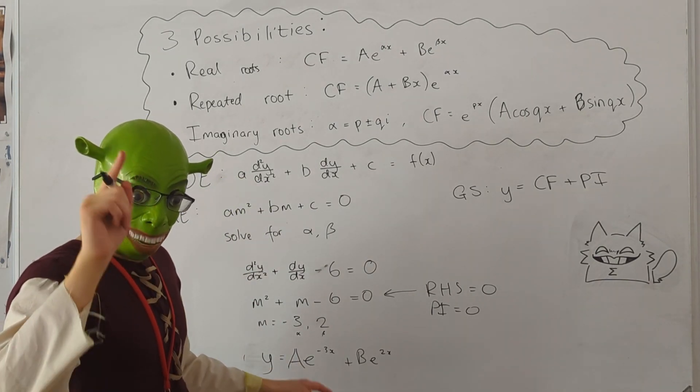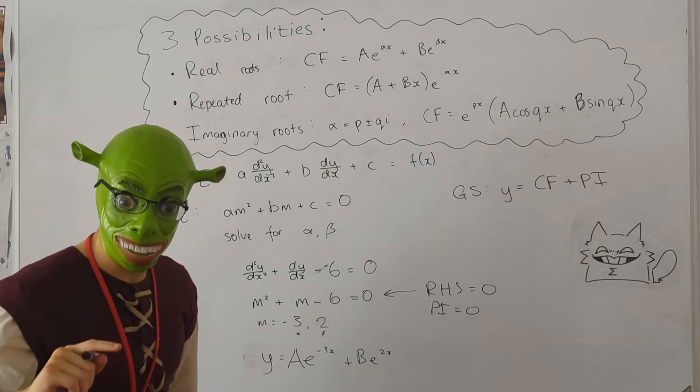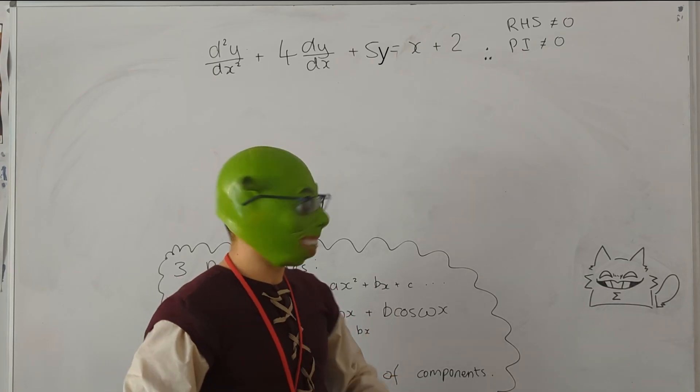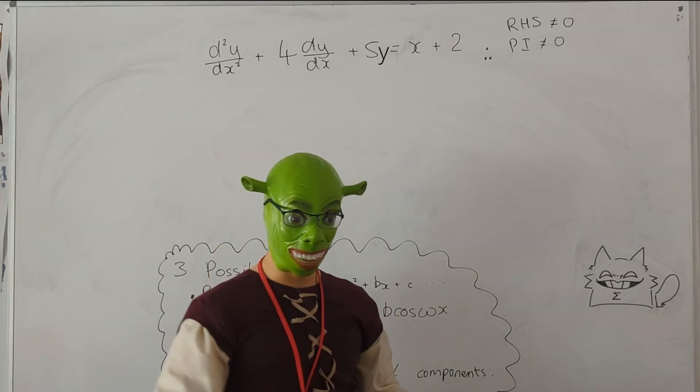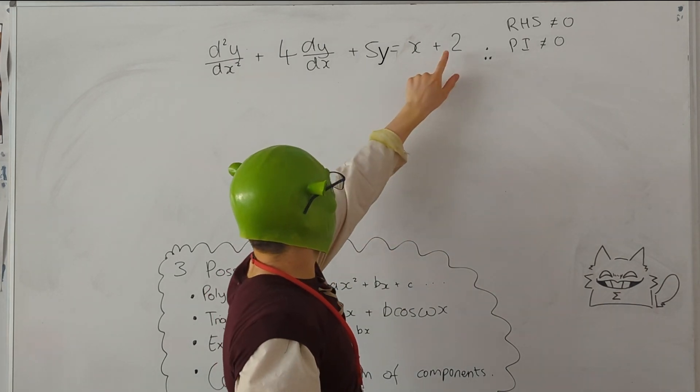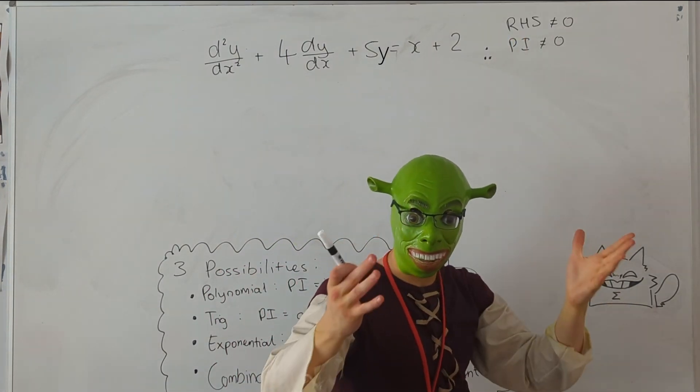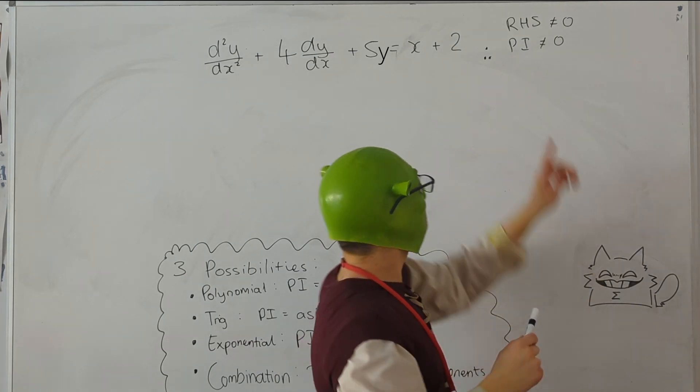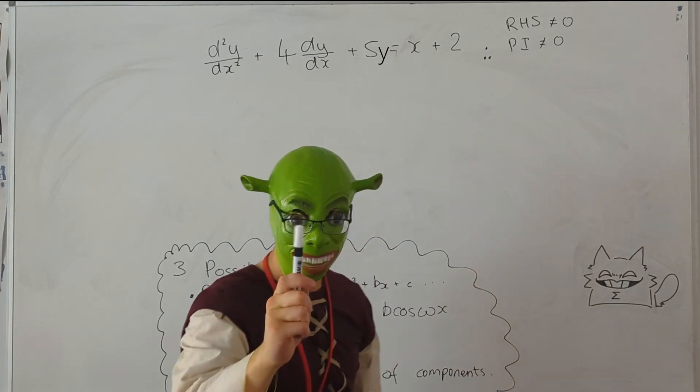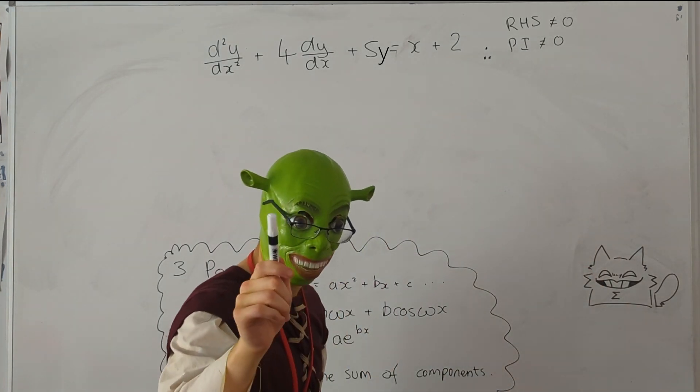That is how you solve a second-order homogeneous differential equation. Now what about when the right-hand side is not equal to 0? So we have here x plus 2. That means that since the right-hand side is not equal to 0, we're going to have a particular integral. It's not going to equal 0. If it equals 0, there's an error, and we'll talk about that later.